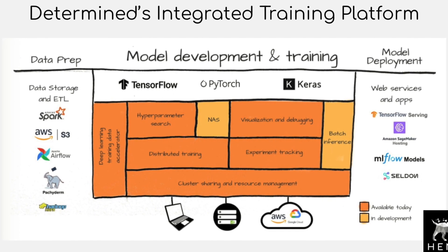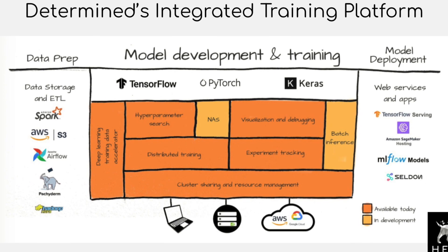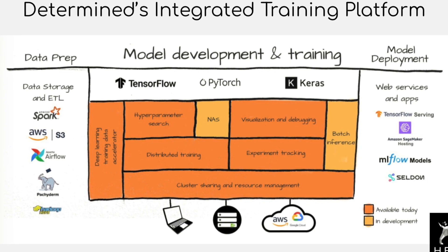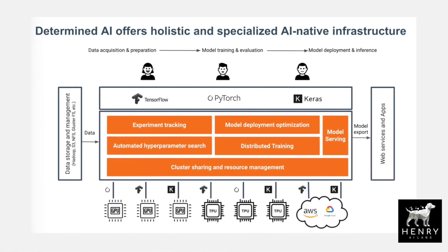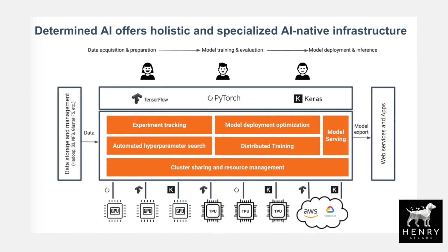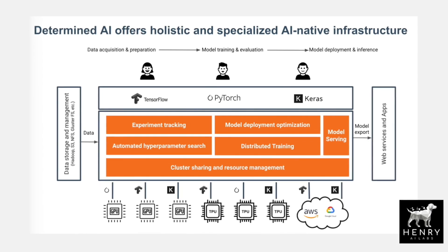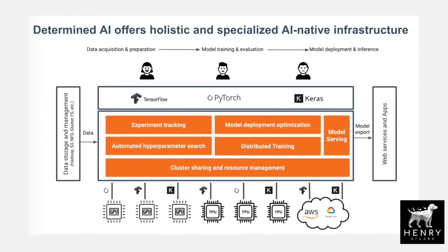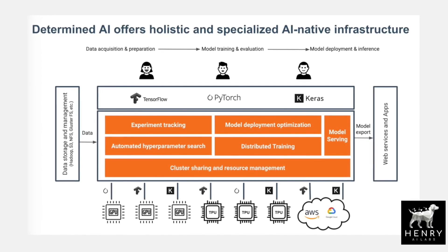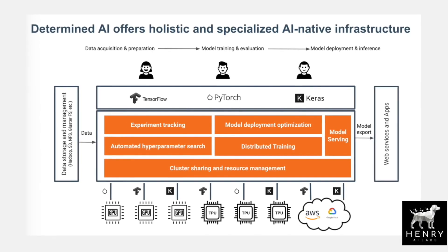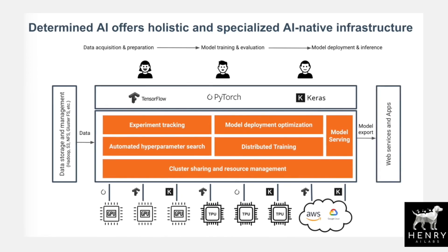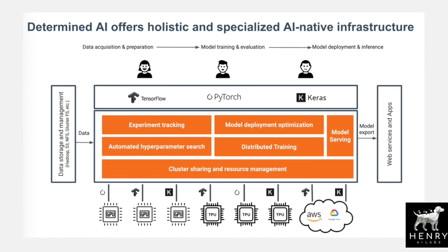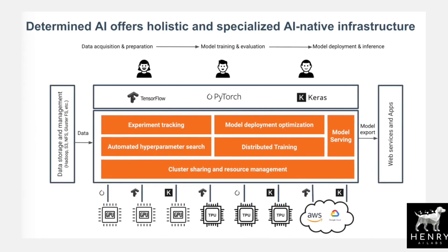So don't waste your time and check out Determined AI. I'll be explaining why I'm so excited about it. As a deep learning researcher myself, I've had to come up with a solution to the hyperparameter optimization problem as well. One of my favorite algorithms for this is Hyperband.